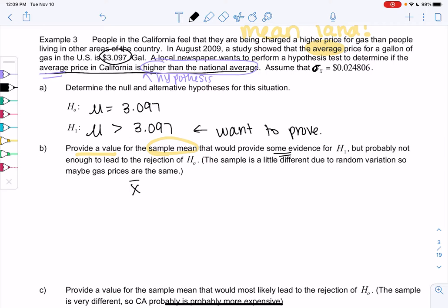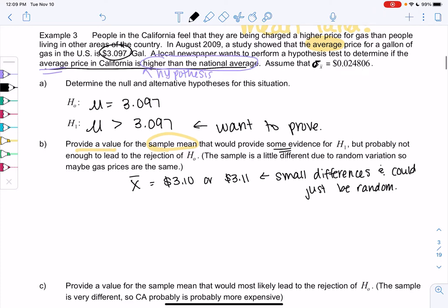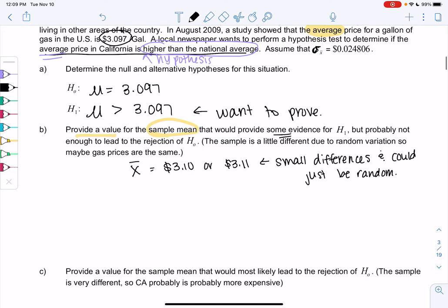Basically, this means the sample is a little bit different due to random variation, so maybe gas prices are the same. So something that's higher than $3.09, but only by a little bit. So that might be like $3.10 or $3.11, right? These are small differences and could just be random. Just because one sample is $3.10, right, that's not significantly more than $3.09. And if you wanted to confirm, you could use the z-score to confirm.